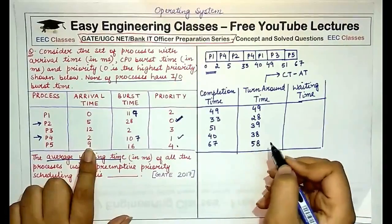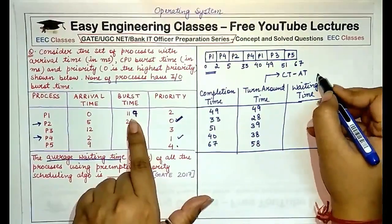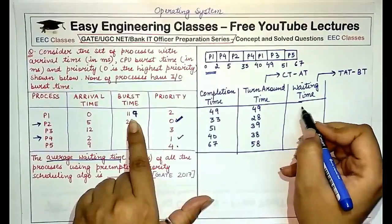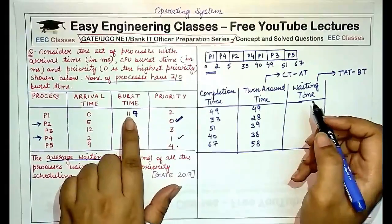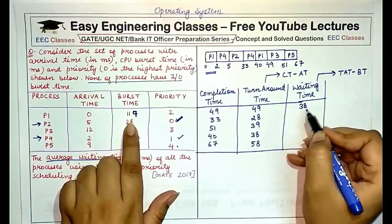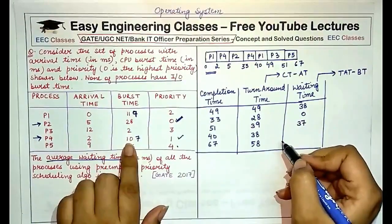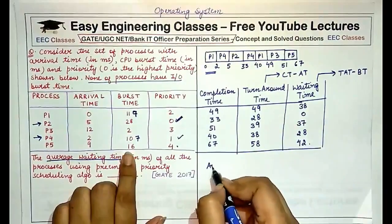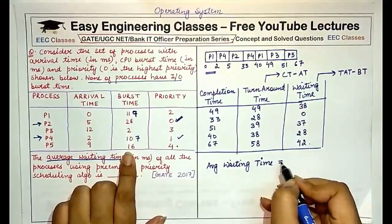Waiting time is turnaround time minus the burst time — remember to use the original burst time. P1 = 49 − 11 = 38, P2 = 28 − 28 = 0, P3 = 39 − 2 = 37, P4 = 38 − 10 = 28, P5 = 58 − 16 = 42. The average waiting time is the sum of all waiting times divided by the total number of processes, which is 5.